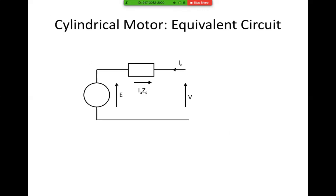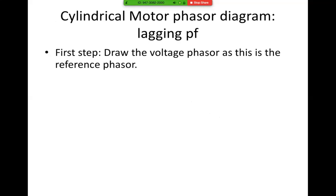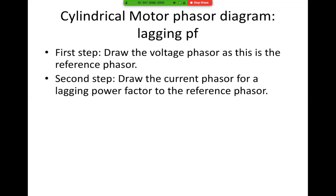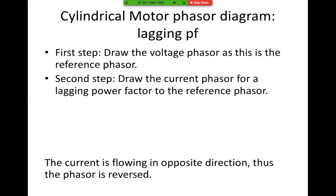Here is the equivalent circuit for a motor. Now the current is flowing towards the machine, and IaZs is where the current enters the element — that is the point of the arrow. So here we have E angle delta equals V angle zero minus IaZs angle beta plus or minus phi. Draw the voltage phasor as the reference phasor. Draw the current phasor for a lagging power factor. Current is flowing in the opposite direction, thus the phasor is reversed — instead of going down, it goes up.